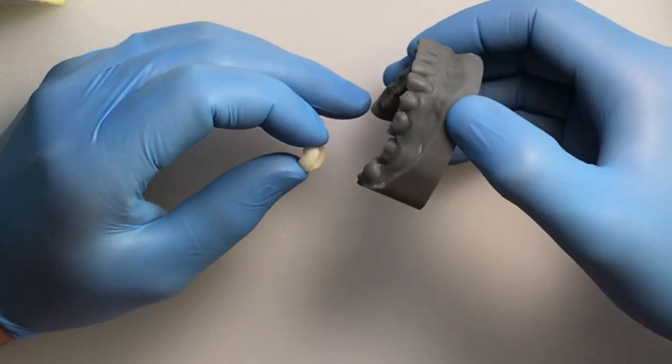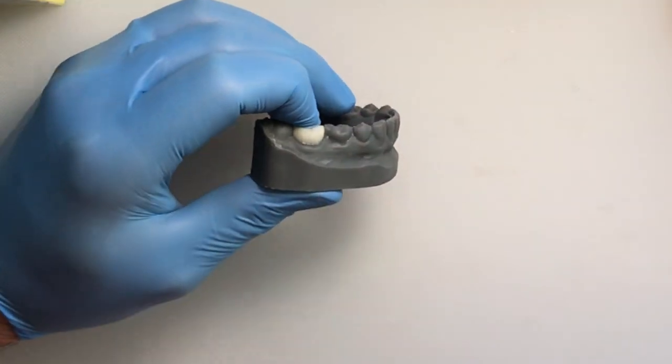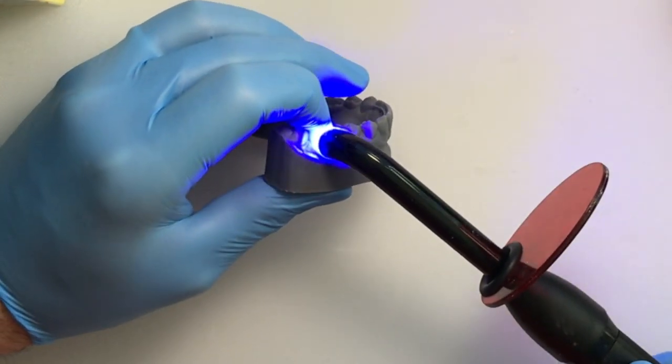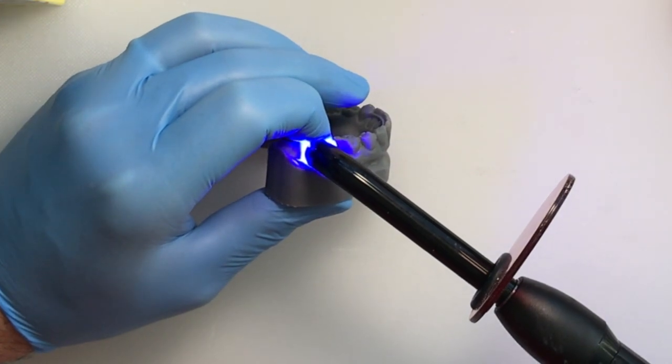Once it's added on, we put it back onto the model. And with a light curing unit, again, cure that so that it is a solid provisional.